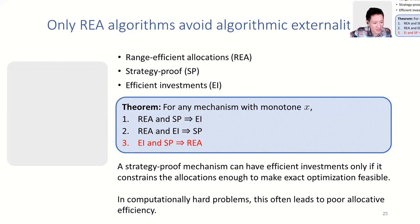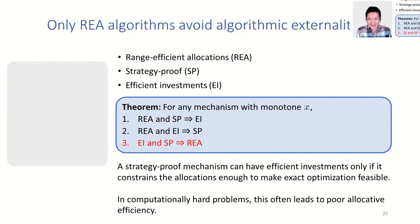Rad asks: are we restricting to deterministic algorithms? Yes, we are restricting to deterministic algorithms. That reflects the fact that we don't yet know how to extend these proofs to randomized allocations, even though randomized allocations are important in computer science. It's an important open question how, if at all, these results extend to randomized allocations — including how the key condition would be stated for a randomized allocation algorithm.